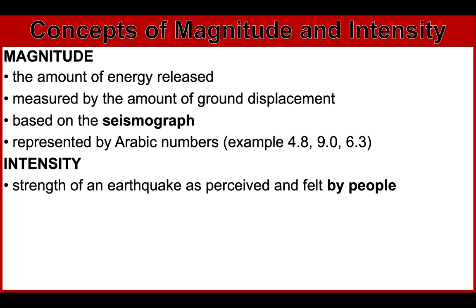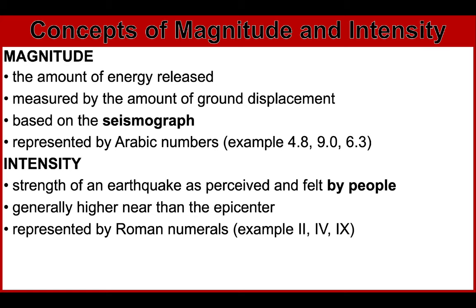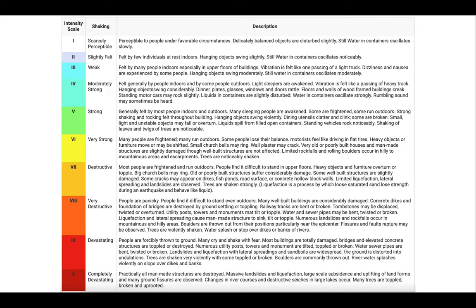Intensity is a numerical rating based on relative effects to people, objects, and the environment, as well as structures in the surroundings. Remember that intensity is generally higher near the epicenter. Intensity is represented by Roman numerals. This shows the PHIVOLCS Earthquake Intensity Scale, or PEIS. You have different colors from white to red, representing weakest to strongest, and the next column shows the strength of shaking with corresponding descriptions.